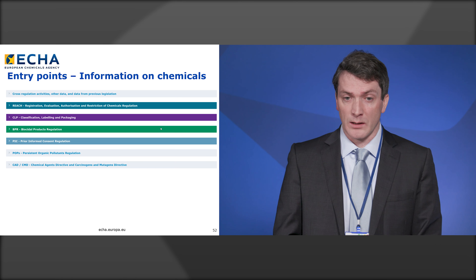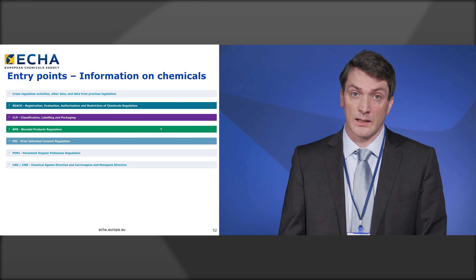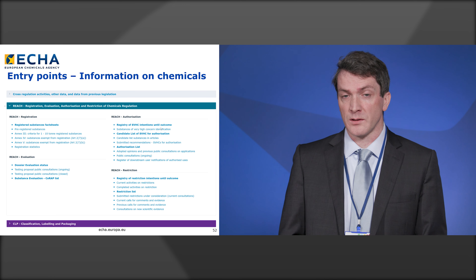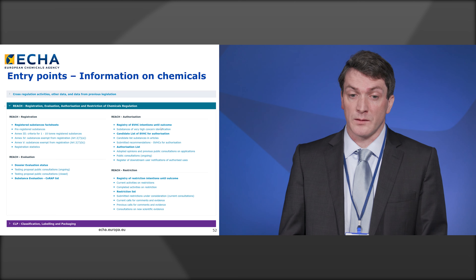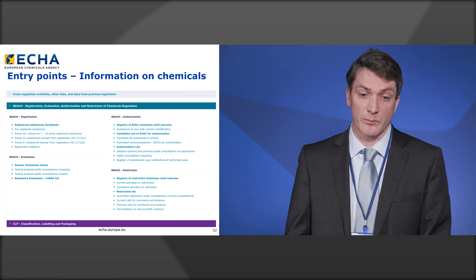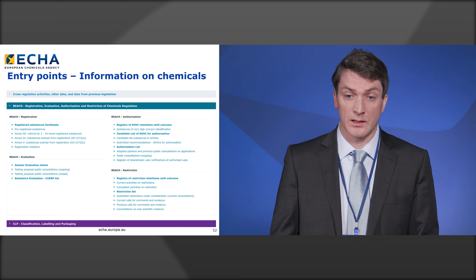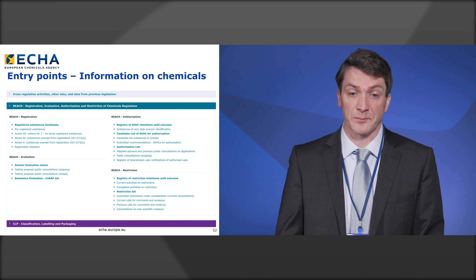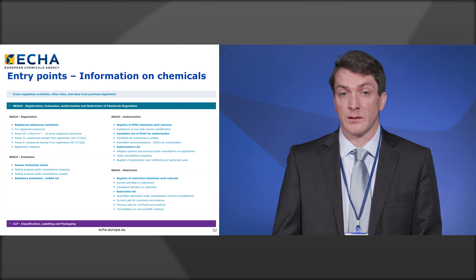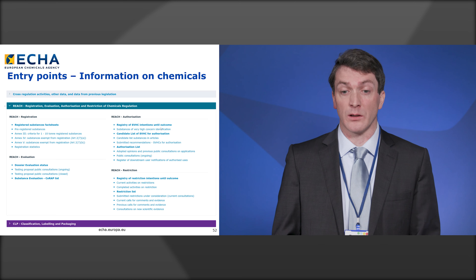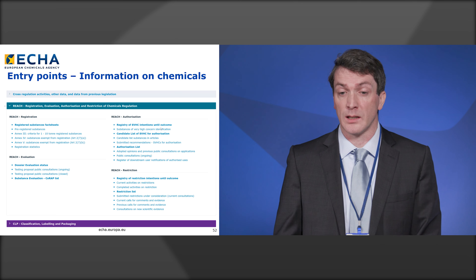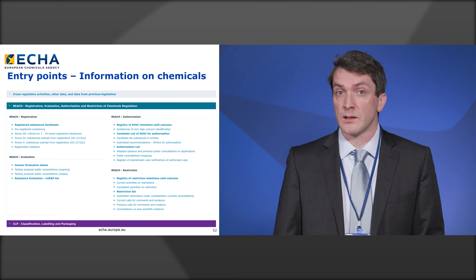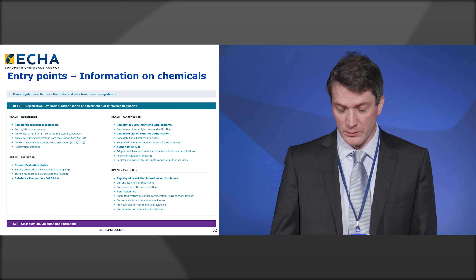Under the information on chemicals section of the ECHA website, there are 70 to 80 regulatory lists and data sets organized by the legislation to which they apply. For example, under REACH you have registered substance fact sheets and various other lists from the registration process. Under Evaluation you have the Dossier Evaluation status, the Substance Evaluation or CORAP list, the Authorization and Restriction list, and the Registry of Intentions for Authorization and Restriction. The same structure exists for CLP, biocides, PIC, OELs, and everything else. The most important, data-rich lists are indicated in bold, and hovering over any list name gives a simple explanation of what data it contains.